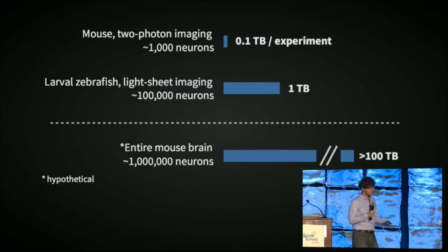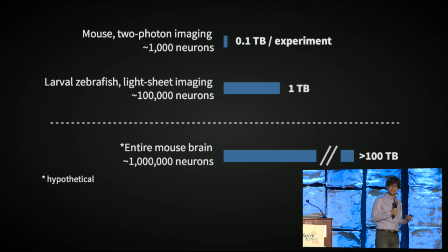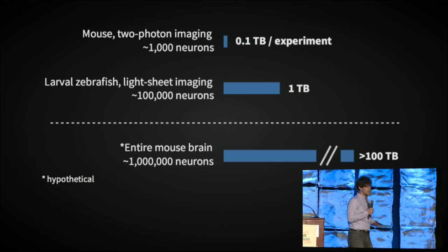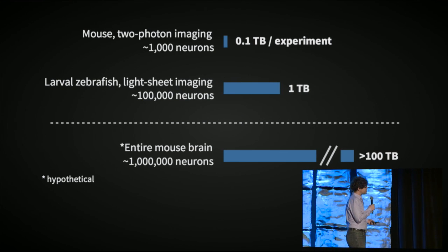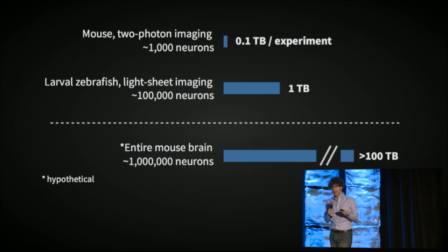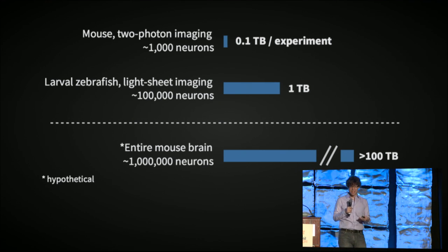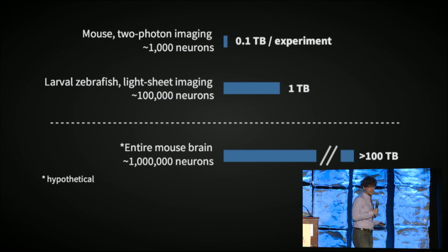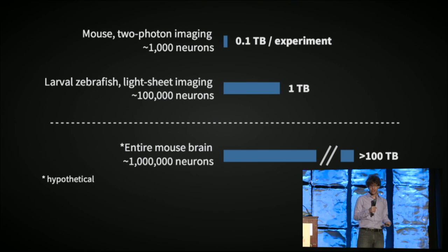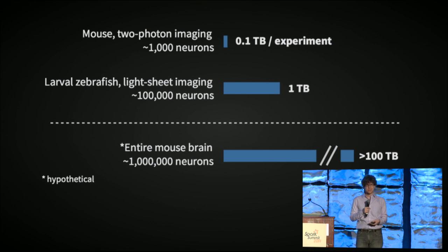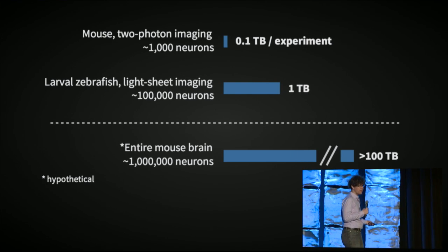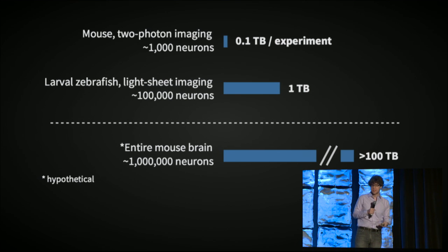To give you some numbers, a comparable kind of method in the mouse, which is, of course, not transparent, so we can't look at the whole brain at once. We only look at a small window. That gives data sets that are about 0.1 terabytes per experiment. The kind of data I was just showing you from the zebrafish, that's like one terabyte per experiment. So one terabyte per fish, basically. And looking ahead into the future, if, and we hope, it becomes possible to do this kind of thing, say, across the entire mouse brain, then we'd be looking at about 100 terabytes per experiment.